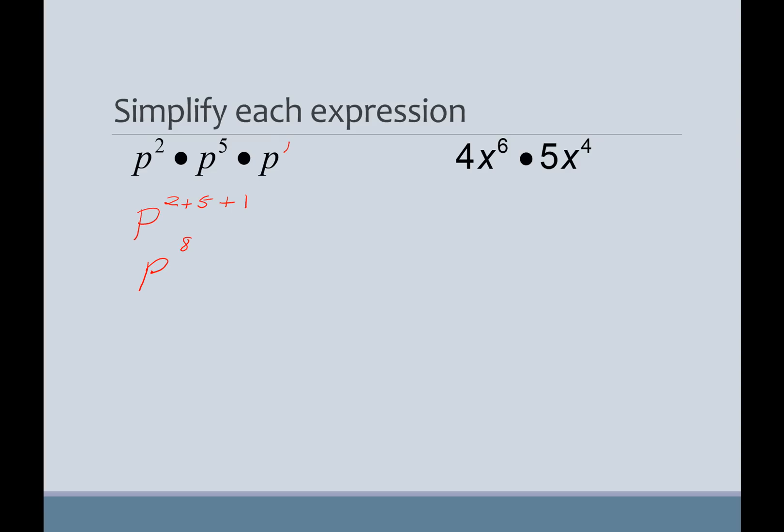Notice that the second example on this slide is a little bit different because I've got some numbers in there with that exponent. So, remember, the associative property tells me I can regroup, right? Or the commutative says I can reorder. But I can rewrite this as 4 times 5 times x to the sixth times x to the fourth. 4 times 5 is 20.